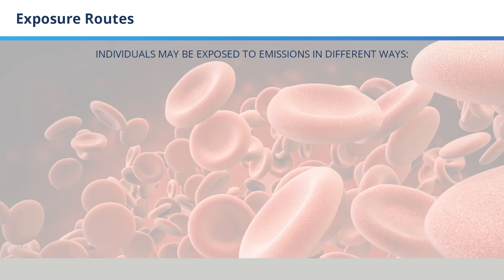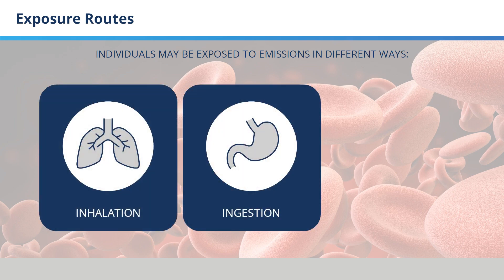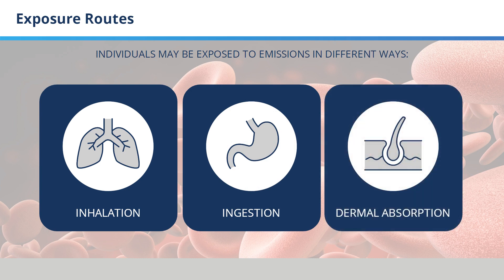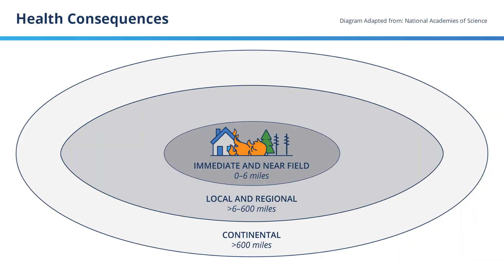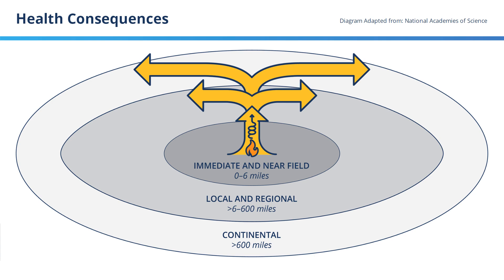Depending on proximity to the fire, individuals may be exposed to emissions in different ways: through inhalation, through ingestion of ash, for example, and through dermal absorption. The health effects from the different components of the plume are relatively unknown. While we do have some understanding of immediate or near-field exposure to fresh emissions, we are at the infancy of our understanding of regional and continental exposure to the transformed WUI plume.